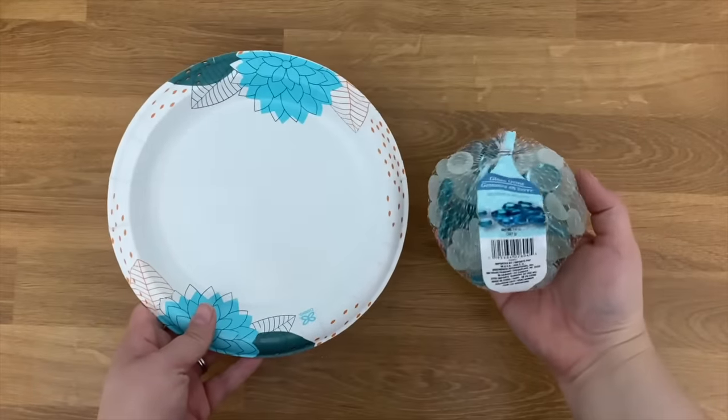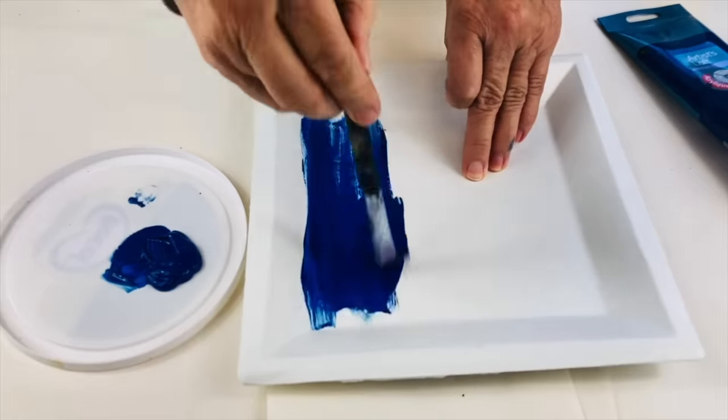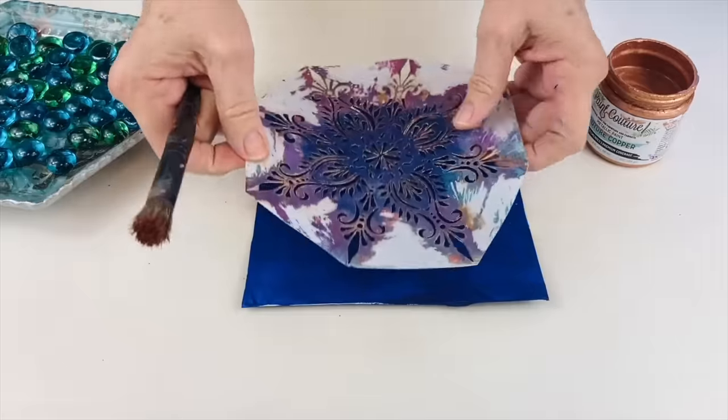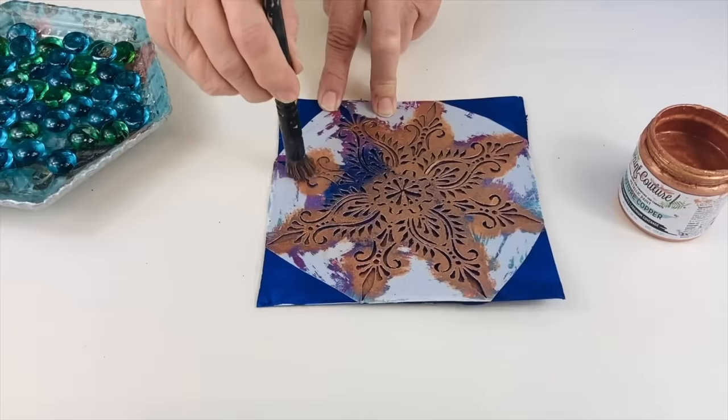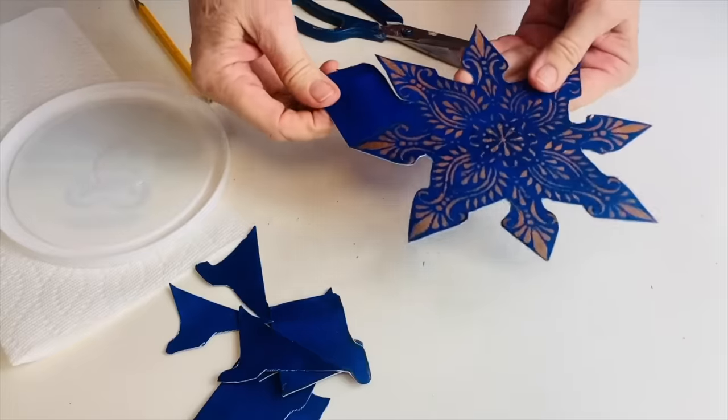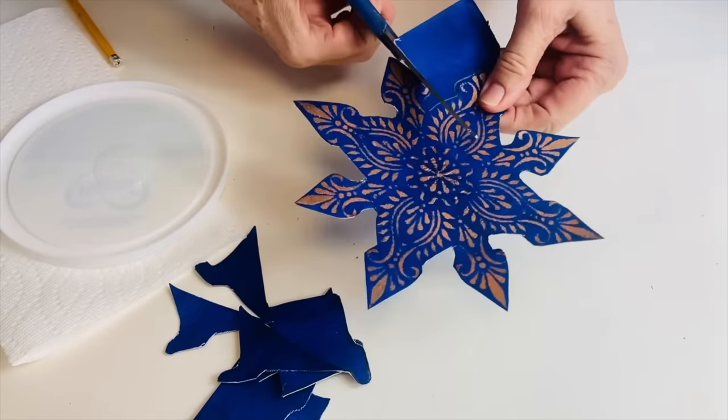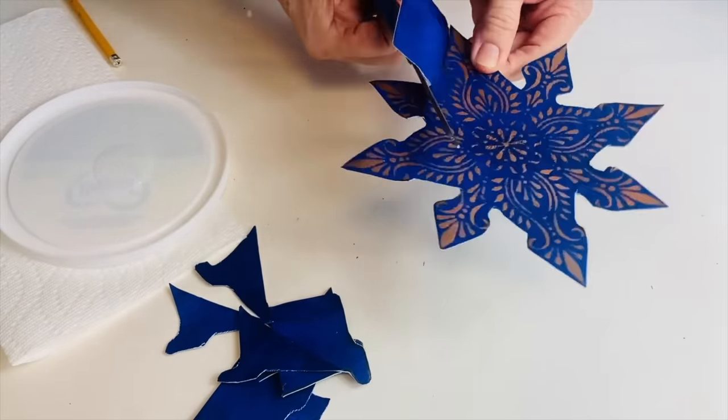Paint this inside part with some dark blue acrylic paint. Once this was dry, I've cut the edges of the plate off. Got here some copper acrylic paint. I'm going to stencil through. So once it was dry, I took a pencil and drew around the contours of this stencil and now I'm cutting it out.